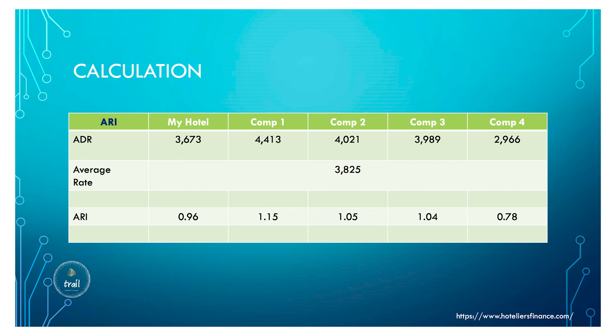Competition one's ARI is 1.15 — very aggressive in rate. Competition two is 1.05 and competition three is 1.04, both above average. Competition four is 0.78 — the lowest. This calculation shows which hotel is aggressive in rate: competition one is highest at 1.15, competition four is lowest at 0.78. My hotel at 0.96 is below average, meaning our rate strategy is not as strong as the market.